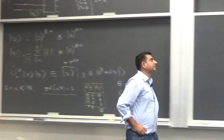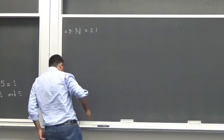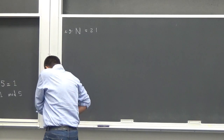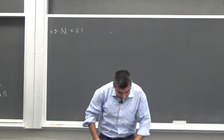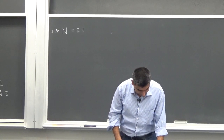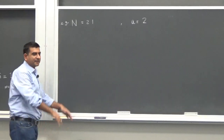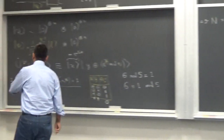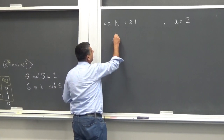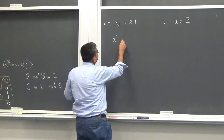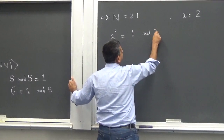So here is an example. Suppose N equals 21, and I choose A equals 2. Of course A equals 2 is greater than 1 and less than N. Now I compute A^x mod N: A^1 mod 21 is 2, A^2 mod 21 is 4, A^3 mod 21 is 8, A^4 mod 21 is 16, A^5 mod 21 is 32 mod 21 which is 11.